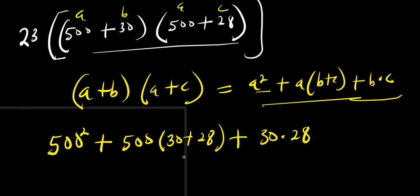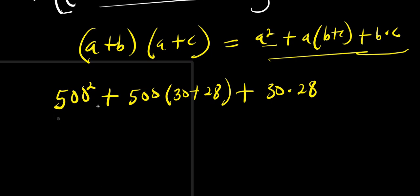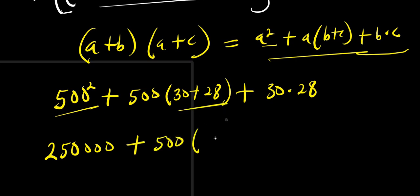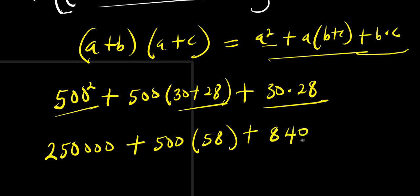That is b times c. So right now, 500 squared is 250,000. 500 times the quantity 30 plus 28, which is 500 times 58, gives 29,000. And 30 times 28 gives 840. You can multiply that out: 28 times 3 is 84, so 28 times 30 is 840.